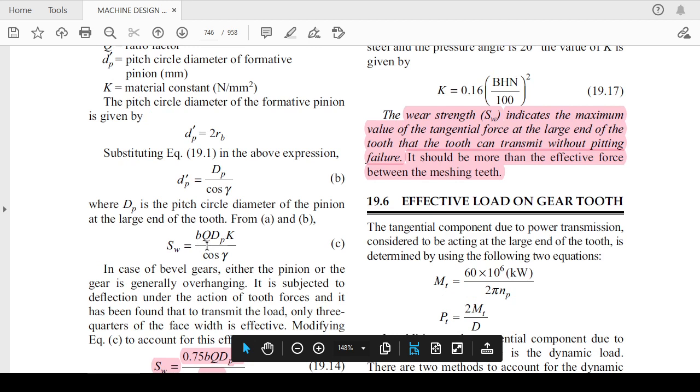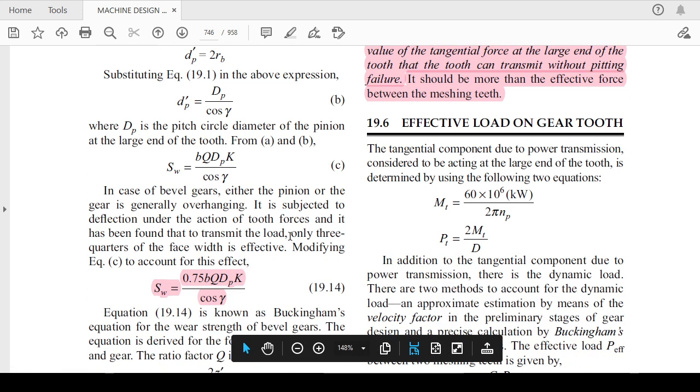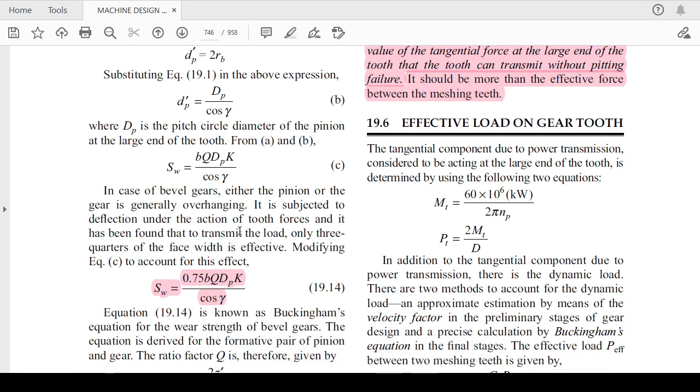The wear strength can be written as b Q D_p K divided by cos gamma. In case of the bevel gear, either the pinion or gear is generally overhanging, so it is subjected to deflection under the action of tooth forces.